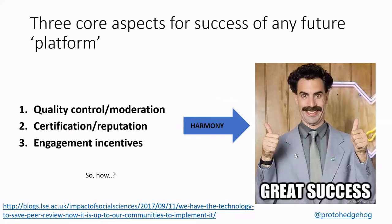Hypothetically speaking, imagine what a future platform would look like if you were to rebuild scholarly communication in 2018. You'd need quality control and moderation — typically done through an editorially controlled peer review process. You'd need certification and reputation — typically ascribed through journal-level metrics and the impact factor. And you'd need engagement incentives. If you really think about how these three core aspects can be harmonized together, we can think about creating a decentralized infrastructure where openness is embedded at a practical level.